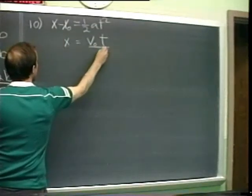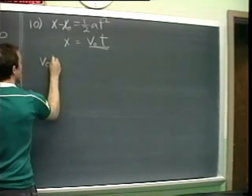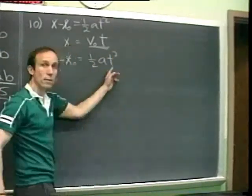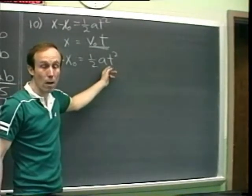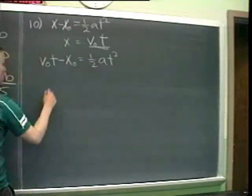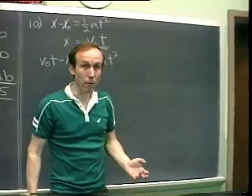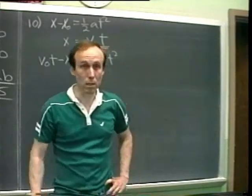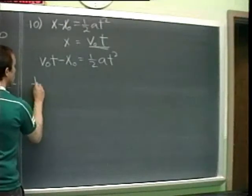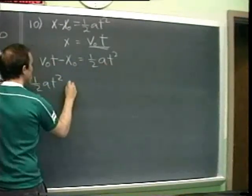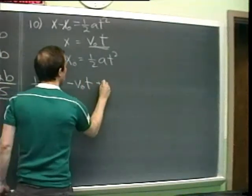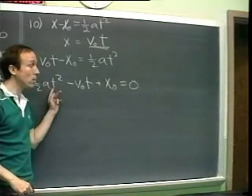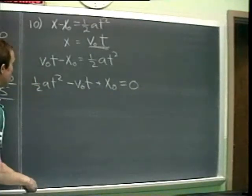So substituting b0·t in for x from the first equation: b0·t minus x0 equals one-half a·t squared. Since we've got a t squared and t is what we're solving for, get it in the form of the quadratic equation. We've got one-half a·t squared, subtract b0·t from both sides and add x0 to both sides, all equal to zero. We've got all three terms: something times t squared, a t term, and a constant term — so we need the quadratic formula.